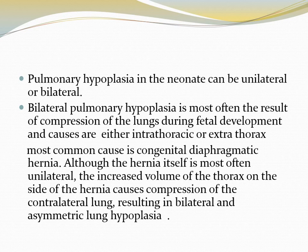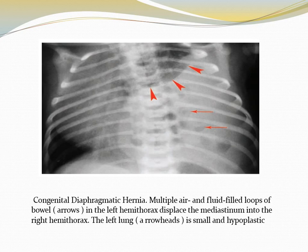Pulmonary hypoplasia in the neonate can be unilateral or bilateral. Bilateral pulmonary hypoplasia is most often the result of compression of the lung during fetal development, and causes are either intrathoracic or extrathoracic. The most common cause is congenital diaphragmatic hernia. Although the hernia itself is most often unilateral, the increased thoracic volume on the side of the hernia causes compression of the contralateral lung, resulting in bilateral asymmetric lung hypoplasia. In this case, there are multiple air-filled bowel loops inside the left hemithorax, compressing the left lung and shifting the mediastinum to the right, causing hypoplastic left lung.